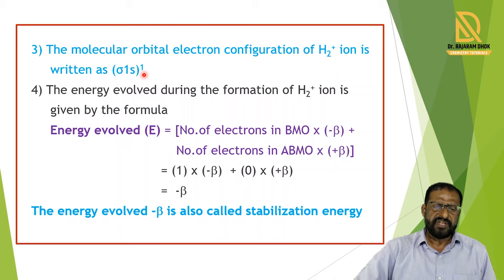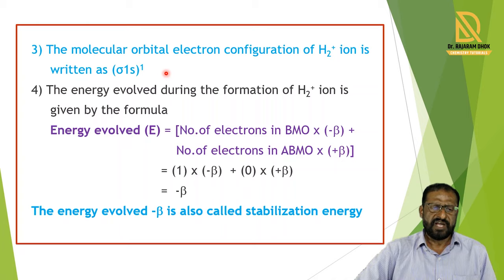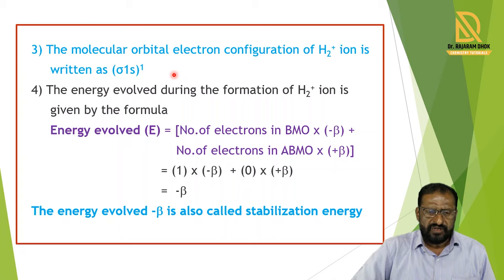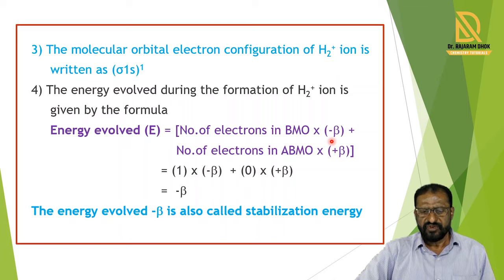The molecular orbital electron configuration of H2 plus Ion is only sigma 1s 1. For the explanation of the stability of this molecule, we can calculate the energy evolved. The formula is: number of electrons in bonding molecular orbital multiplied by minus beta, plus number of electrons in antibonding molecular orbital multiplied by plus beta.